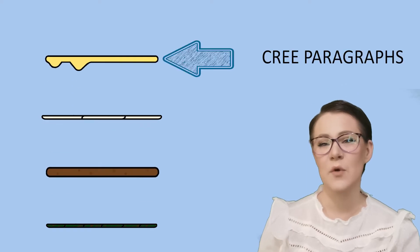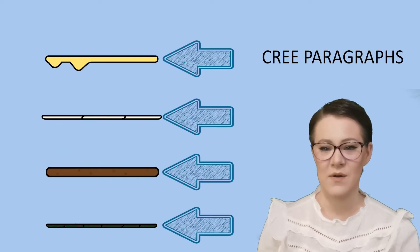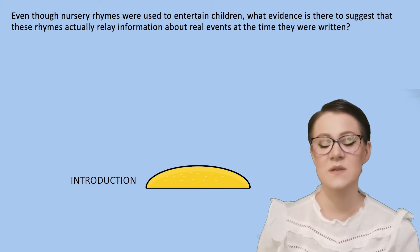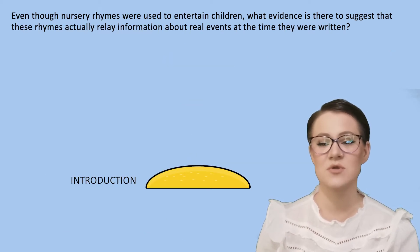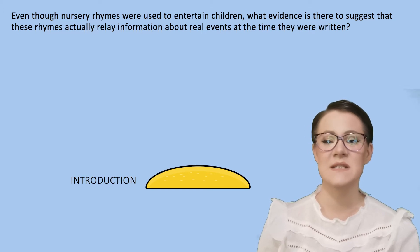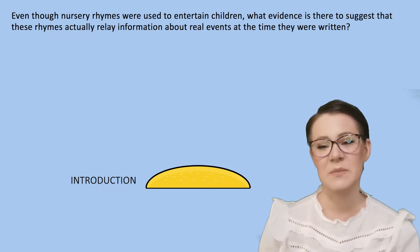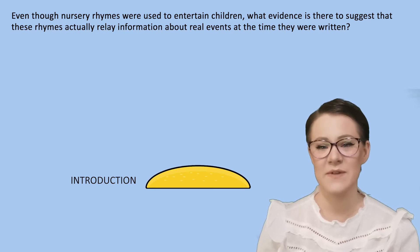So if we go back to our burger framework again, you will remember that not including our introduction and conclusion paragraphs, you should have four CREE paragraphs. The example essay I'm going to show you here using the CREE format is: even though nursery rhymes were used to entertain children, what evidence is there to suggest that these rhymes actually relay information about real events at the time that they were written?